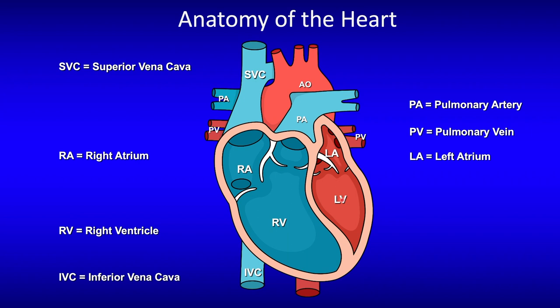Remember, the L in Mitral reminds you that the Valve is on the Left side. From there, the Ventricle contracts, Blood passes through the Aortic Valve into the Aorta and gets spread through the rest of the body.